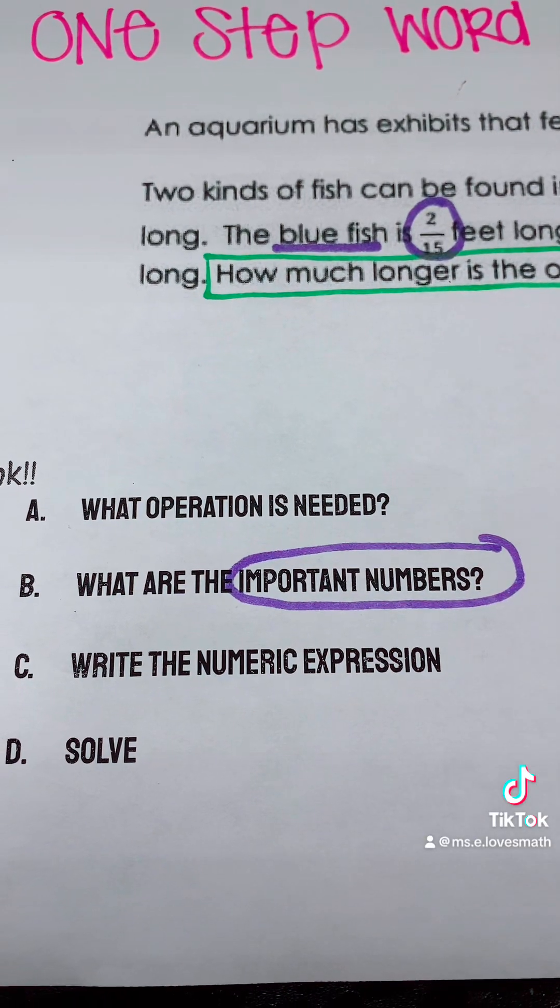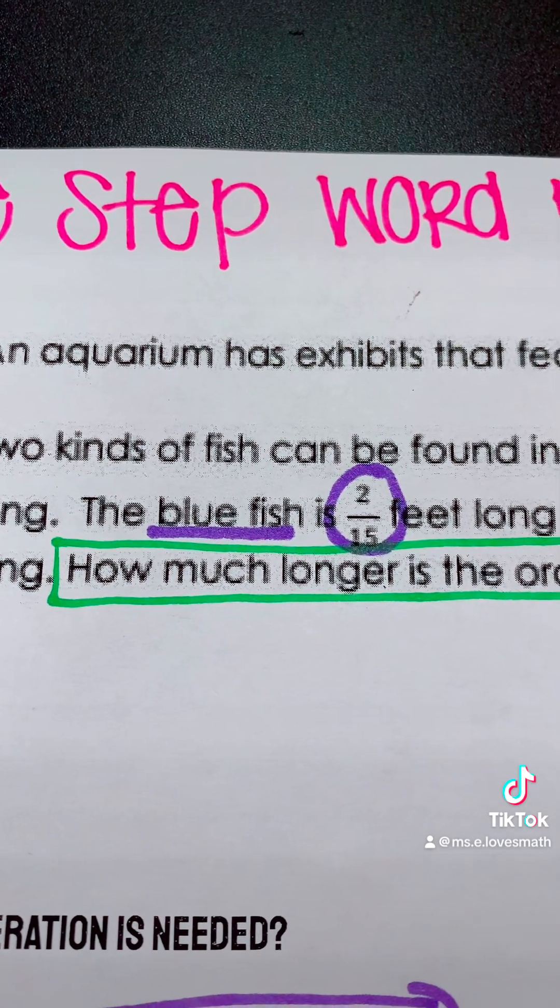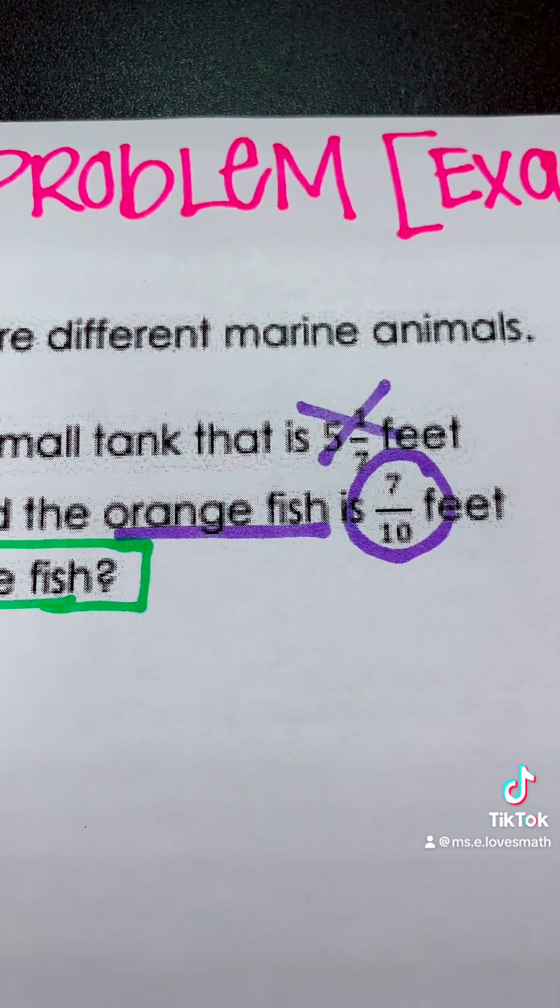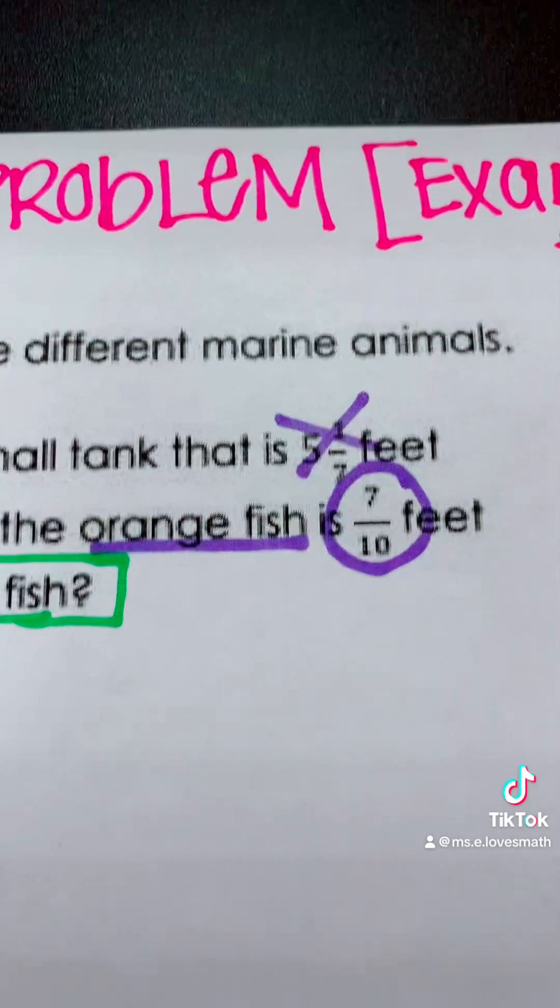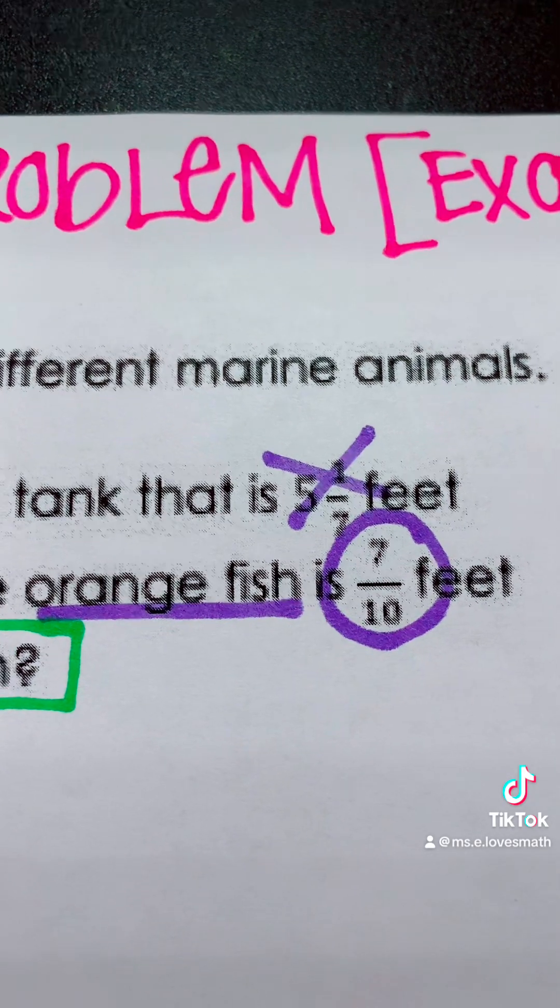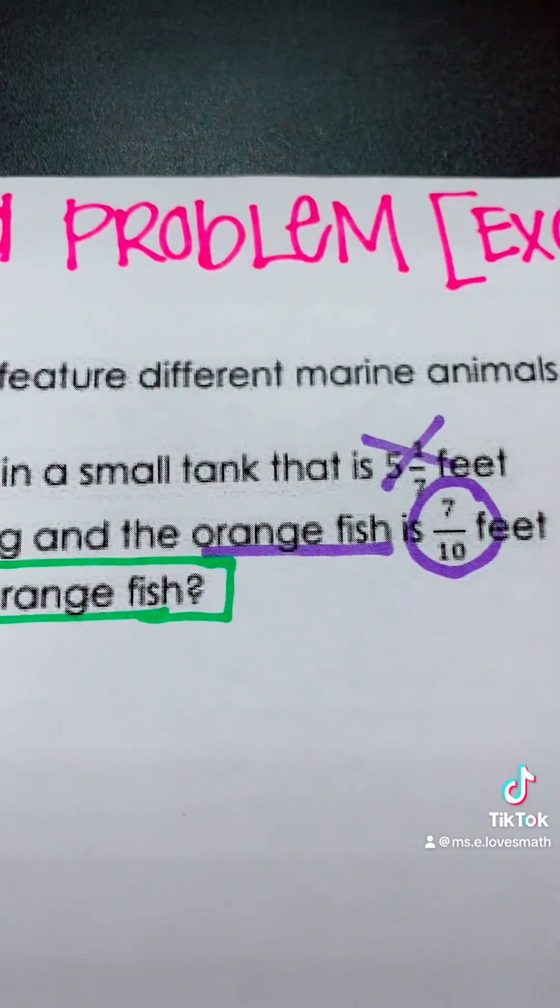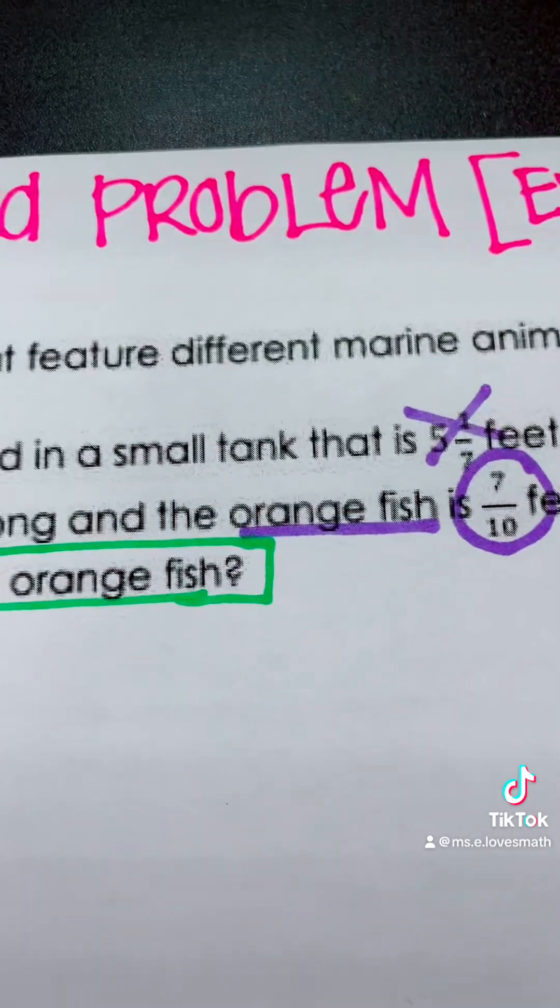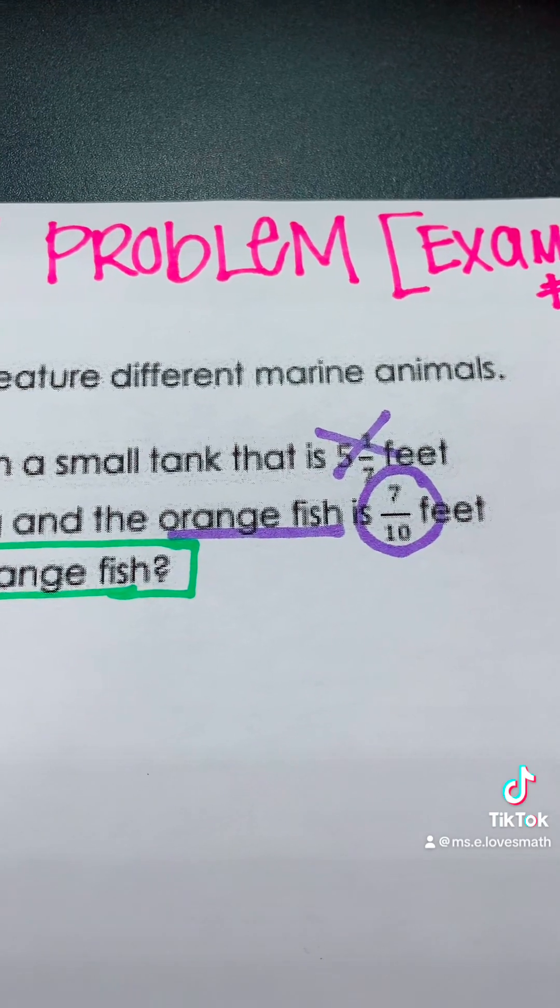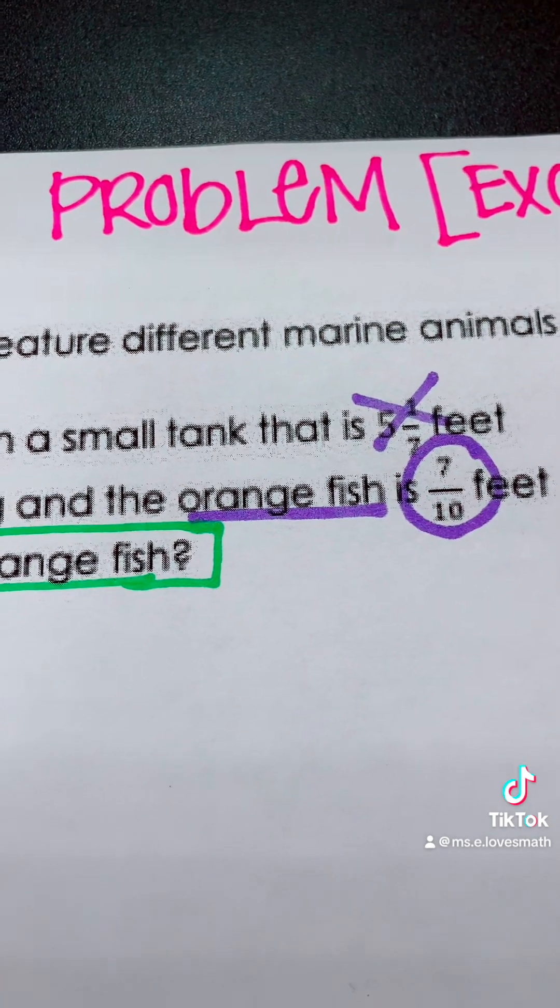I have went ahead and circled our important numbers. 2/15 is an important number, and 7/10 is an important number. 5 1/7 is a number that is not needed. It is a distractor number, so I have crossed it out. It is the size of the tank, which is not needed to solve the problem. We need the lengths of the fish. So the blue fish and the orange fish is what we need.